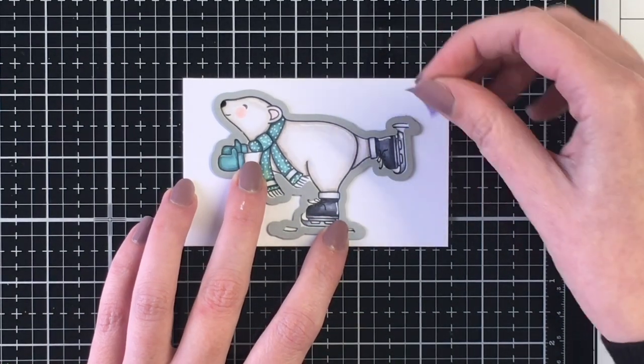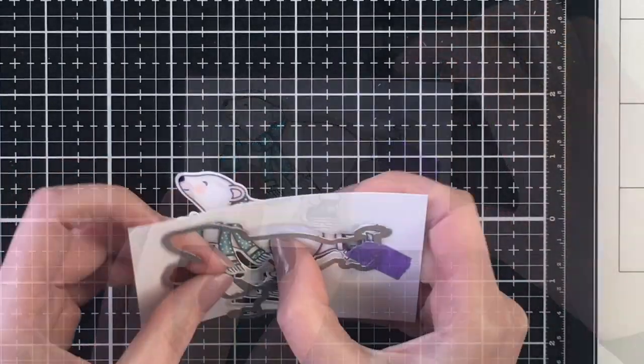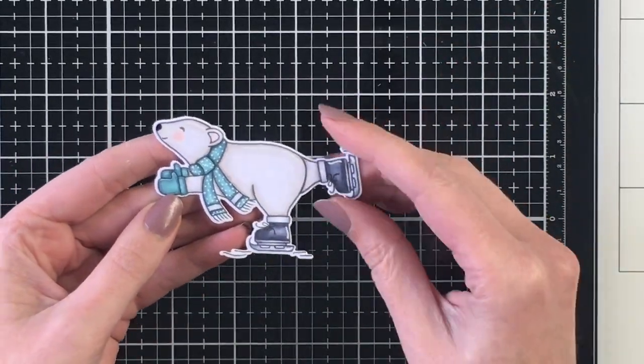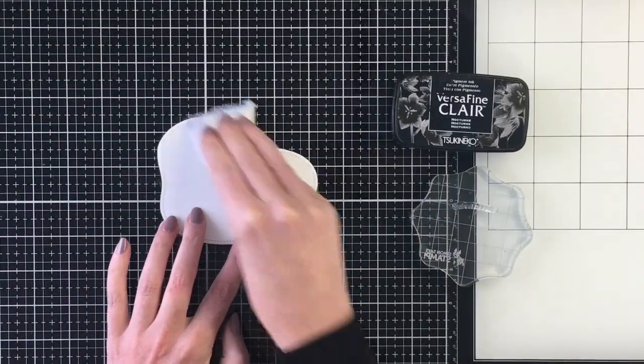And we have our little polar bear here with our nice white border. And I love how it cuts out the little skating lines as well.